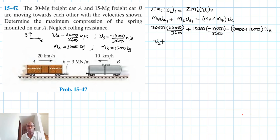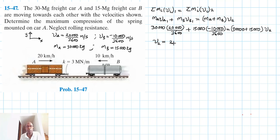Grab your calculator. We compute: 30,000 times 20,000 divided by 3600, minus 15,000 times 10,000 divided by 3600, then divide the result by 45,000. This gives us v2 equal to 2.7778 meters per second. This is the velocity when both cars are coupled together.